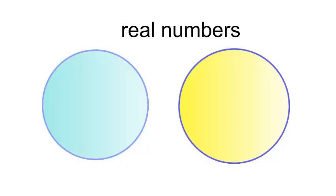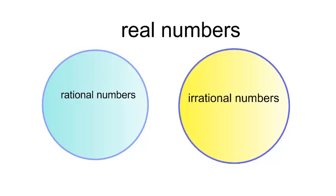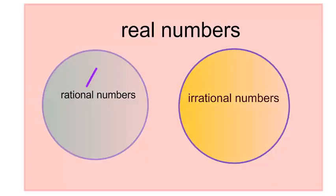Okay, so I have real numbers. Out of those real numbers, I have irrational numbers and I have rational numbers. Rational numbers are real numbers and irrational numbers are real numbers.